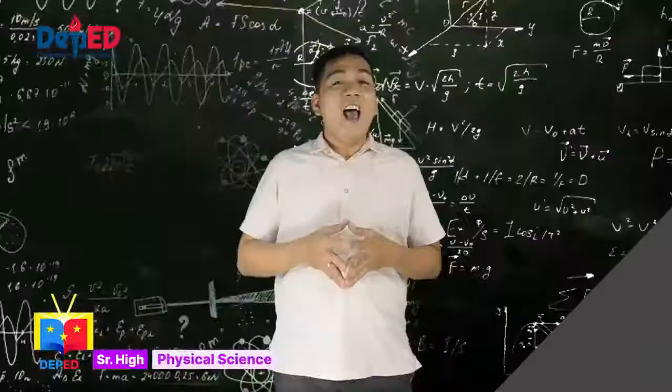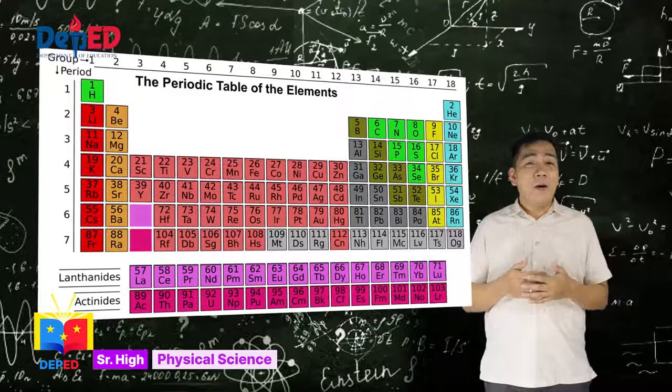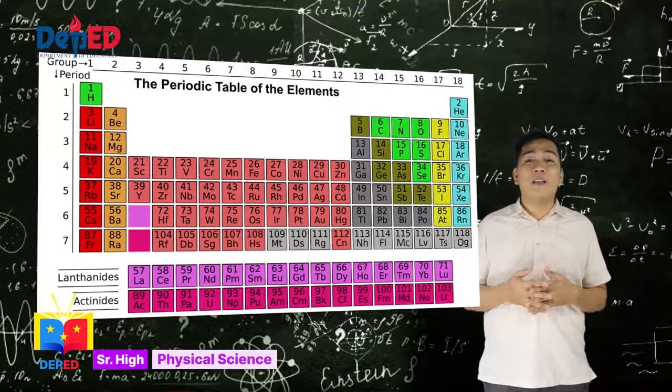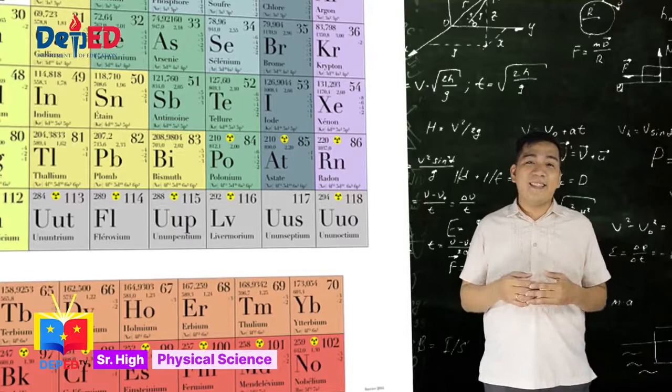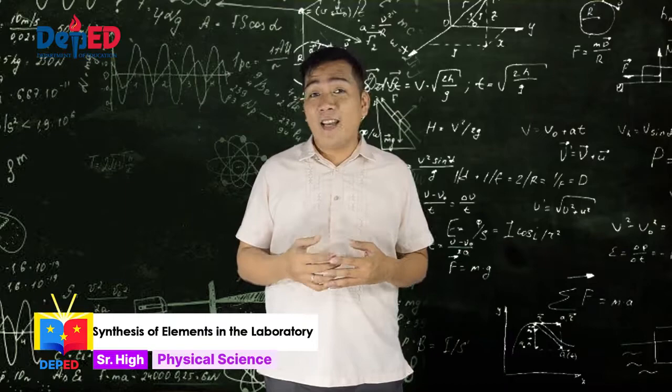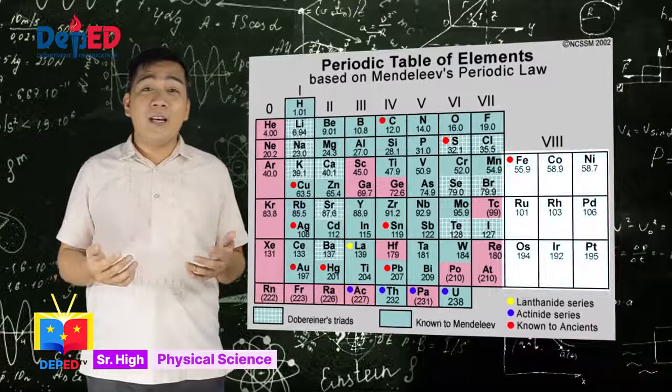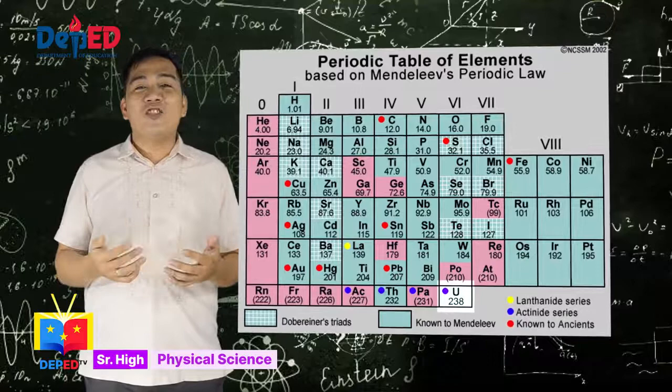The periodic table of elements as we know it today has not always looked like that. When I first saw the periodic table as a grade 7 student in Pampanga, there were still elements in period 7 that were not yet discovered or synthesized. Symbols like UUT and UUP were used to represent these elements. When Dimitri Mendeleev first arranged the elements in the periodic table in 1869, it looked like this. He left spaces for elements that were not yet discovered. You can also notice that the heaviest element known then was uranium.